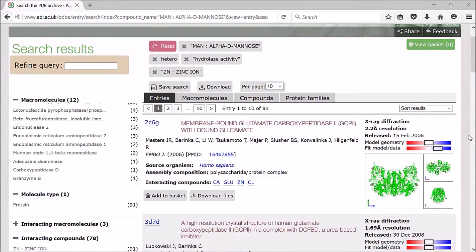Above the search results, you have these four tabs for entries, macromolecules, compounds, and protein families.